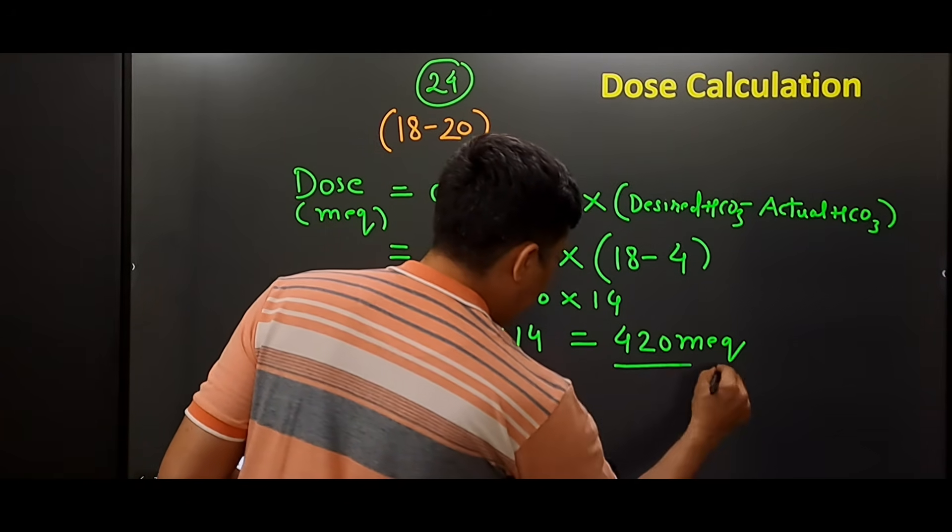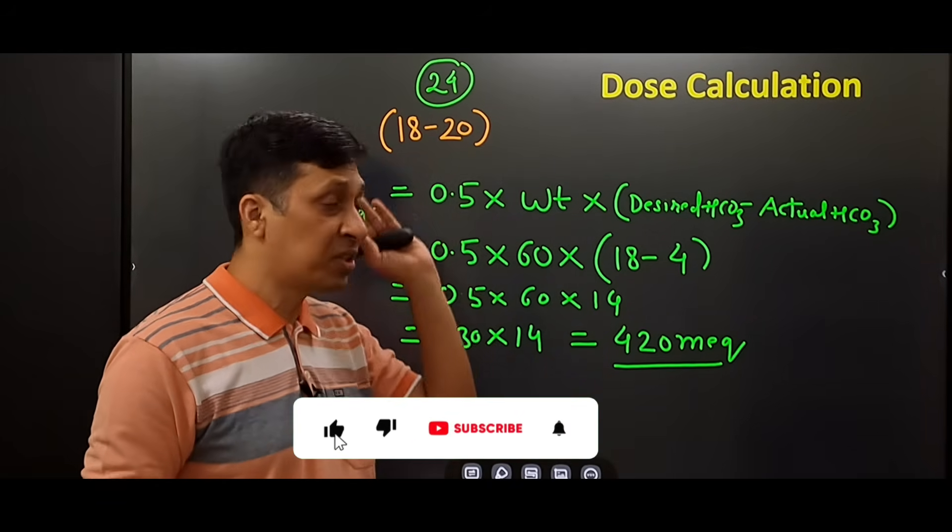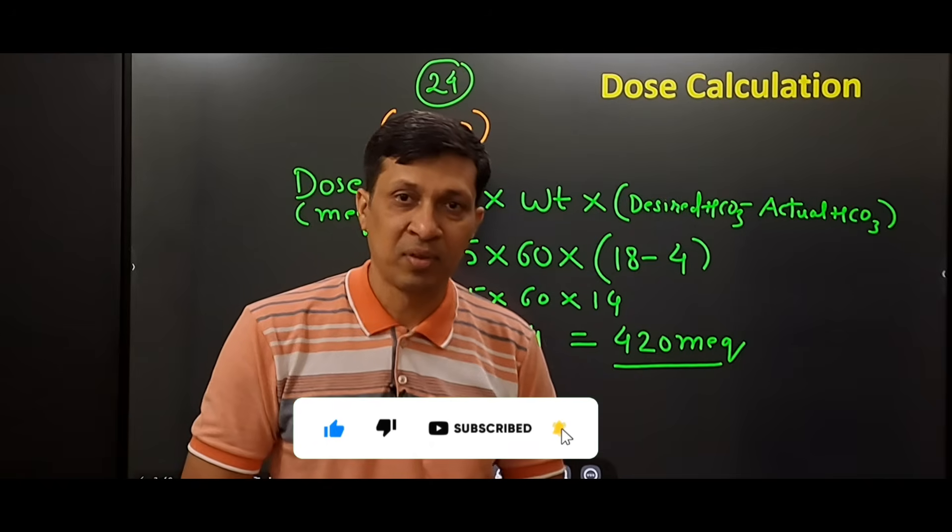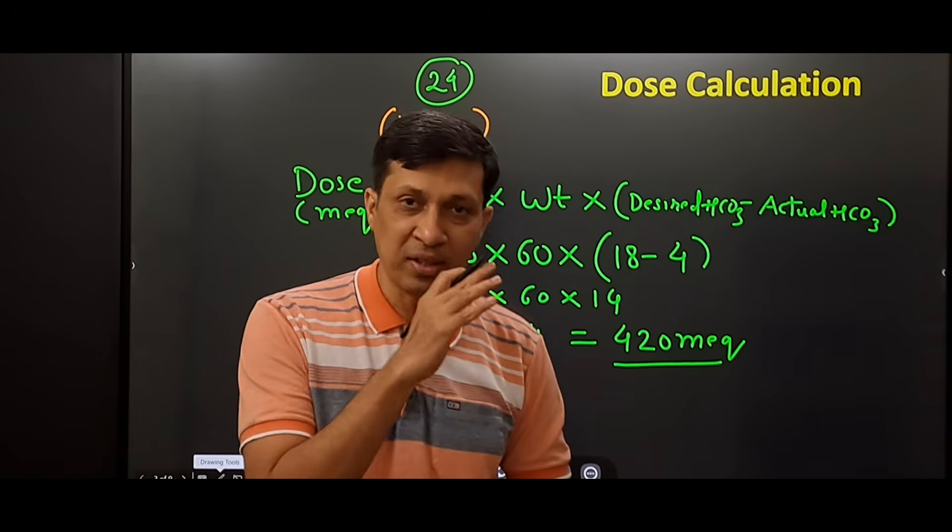This much drug we are supposed to give the patient so that the bicarb level comes to 18 and the patient's pH will be corrected. Now we will see how much actual quantity of drug is required to be given.